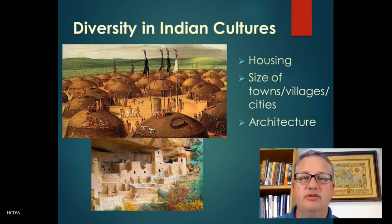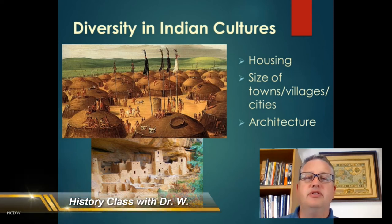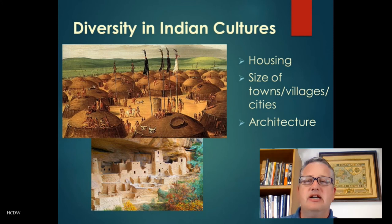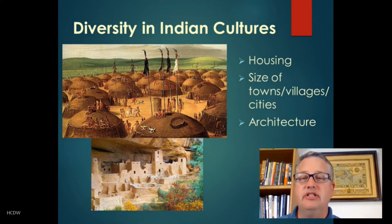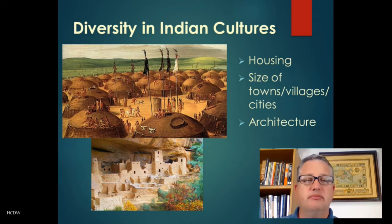There is much diversity in terms of things like housing, the size of towns, villages, and cities, and architecture. In some cases you're talking about very temporary housing — some threw up very mobile and easily constructed forms like teepees or tents that could be quickly put together as they followed the herds. In other cases, what you see on the screen are more permanent settlements, and in some cases very highly developed forms of construction and architecture, as you see here in the cliff dwellings in the lower part of this picture.